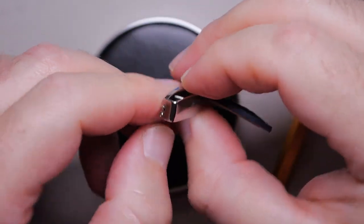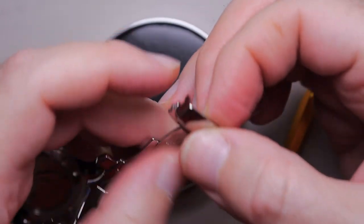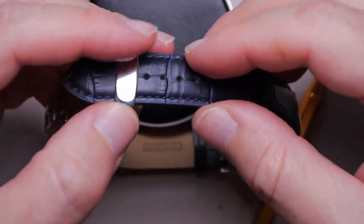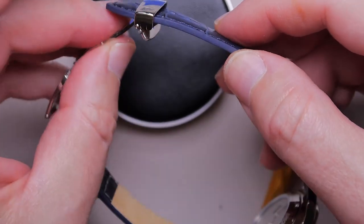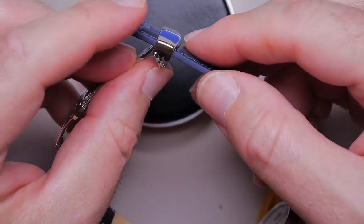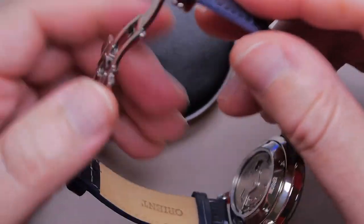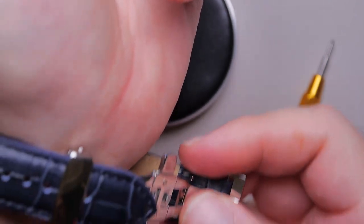But it can also differ when you change clasps because the geometry has changed. So you may be on one hole with a buckle and another on a clasp. That is totally common.